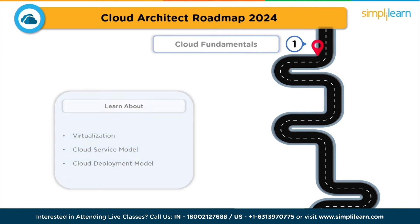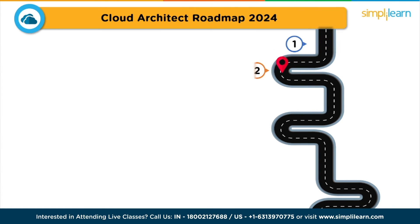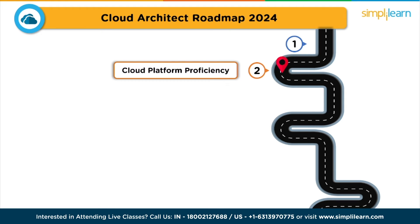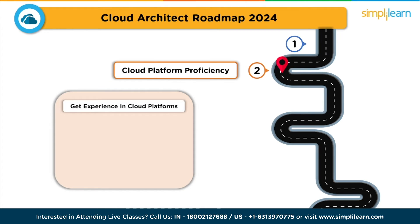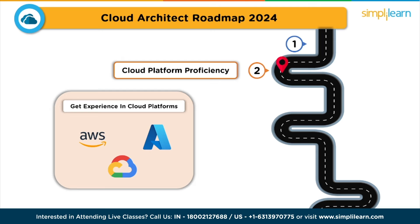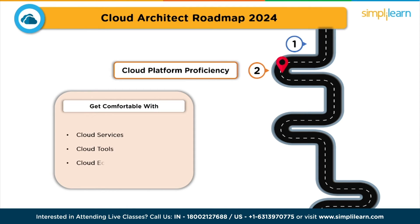The second step of this roadmap is cloud platform proficiency. Cloud architects are often platform-agnostic, which means they need to be proficient in multiple cloud platforms. Get experience in platforms like Amazon Web Services, Microsoft Azure, and Google Cloud Platform. This step involves becoming comfortable with various cloud services, tools, and ecosystems across different cloud providers.